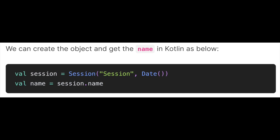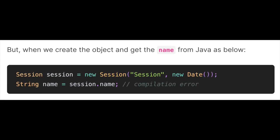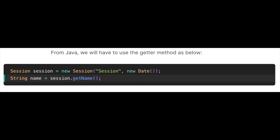But what if we want to create the object and get the name from Java? We need to write it using Java syntax, using the 'new' keyword. If we write: String name = session.name, it will give a compilation error. From Java, we have to use the getter method instead: Session session = new Session(...), then String name = session.getName(). Now it will compile and work as expected.